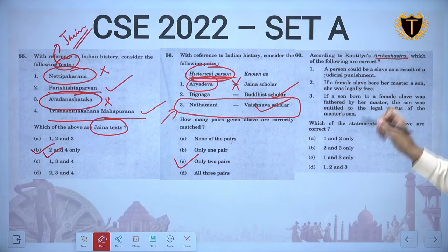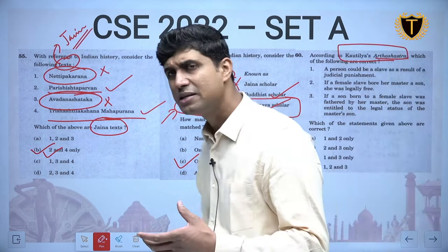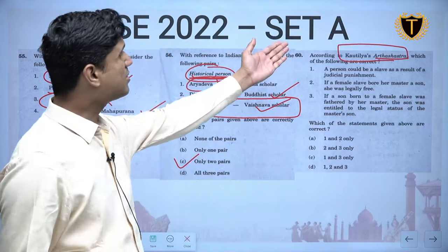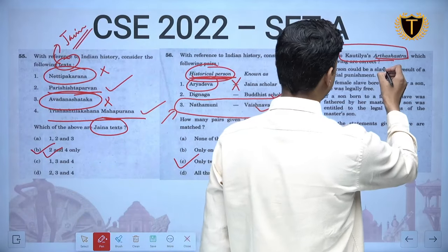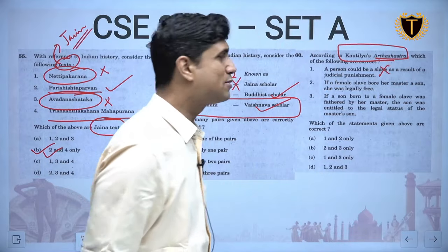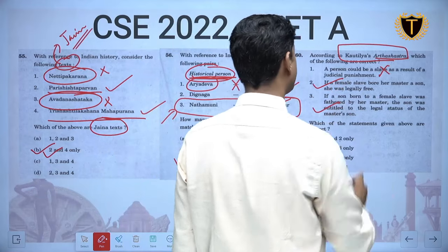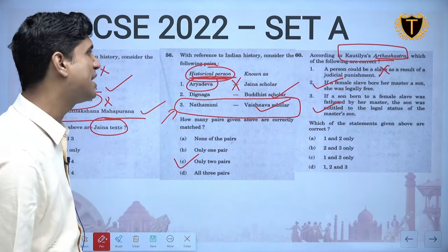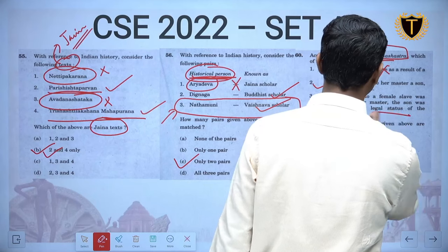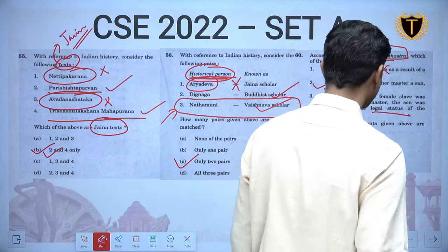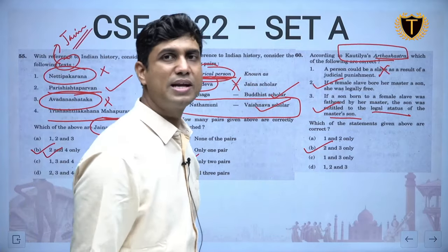According to the Kautilya's Arthashastra, which statements are correct? A person becoming a slave as a result of judicial punishment — not correct. If a female slave bore her master a son, she would become legally free — correct. A son born of a female slave would be given the legal status of the master's son — also correct. So answer is 2 and 3. This requires detailed knowledge of the Arthashastra.